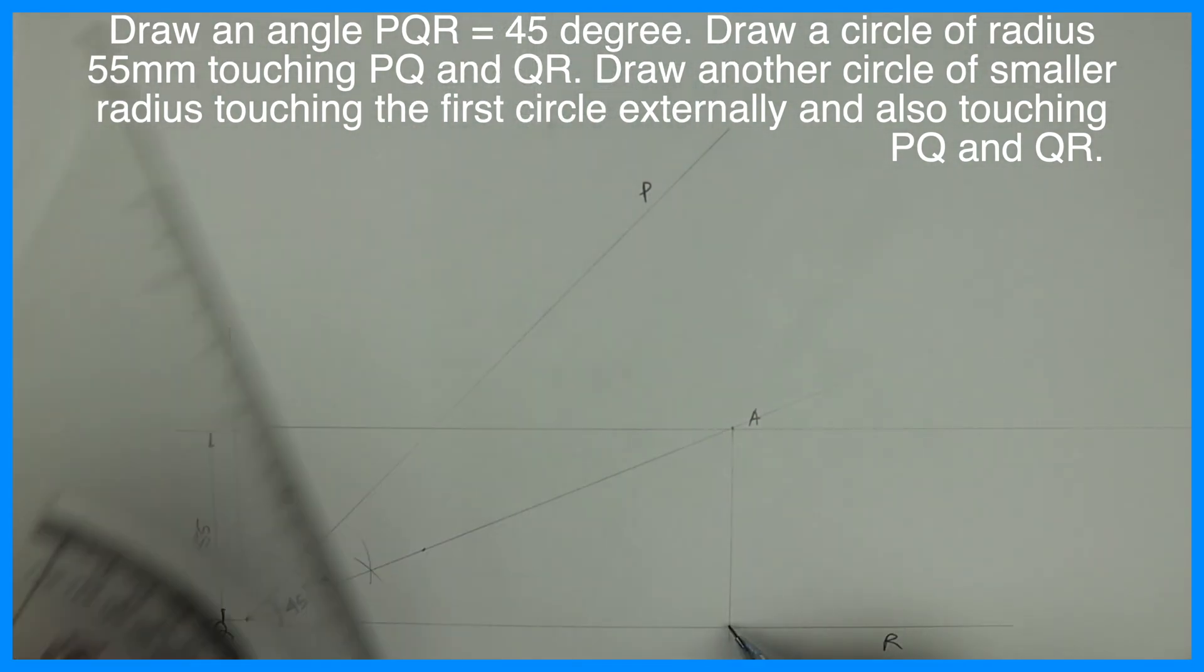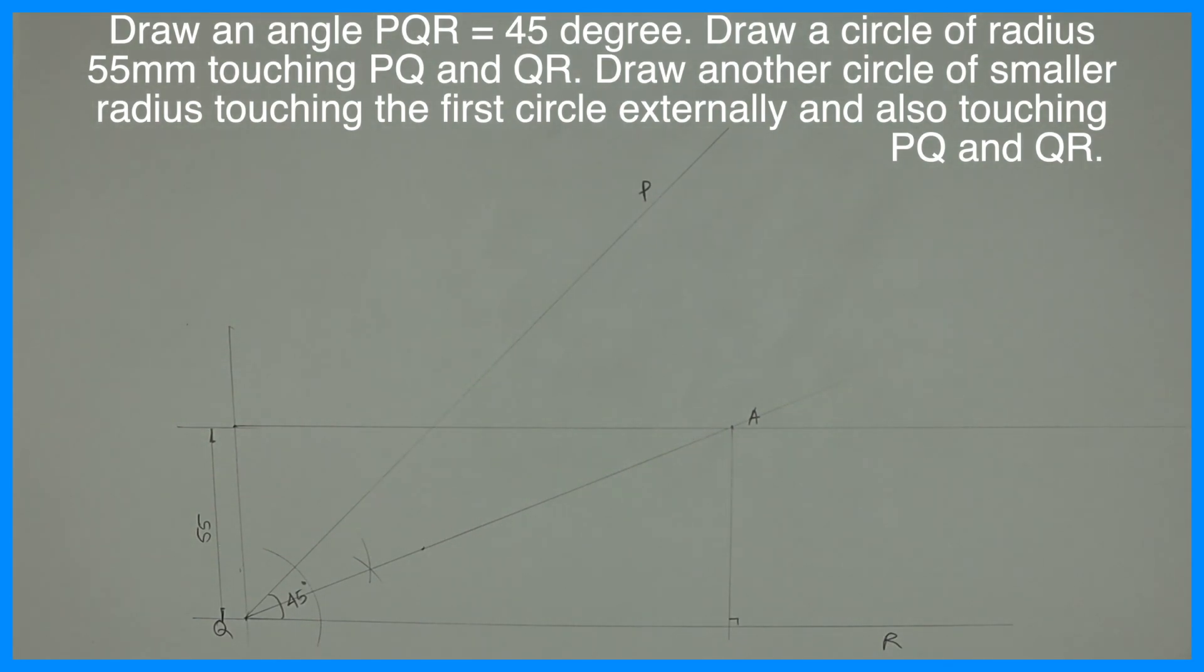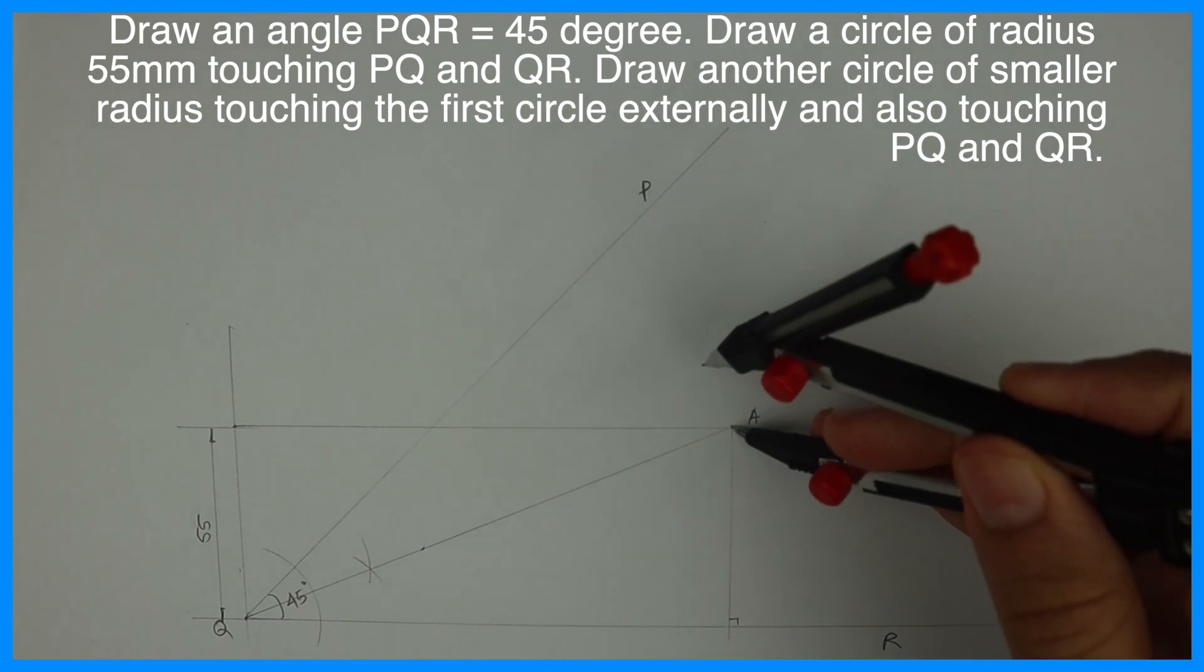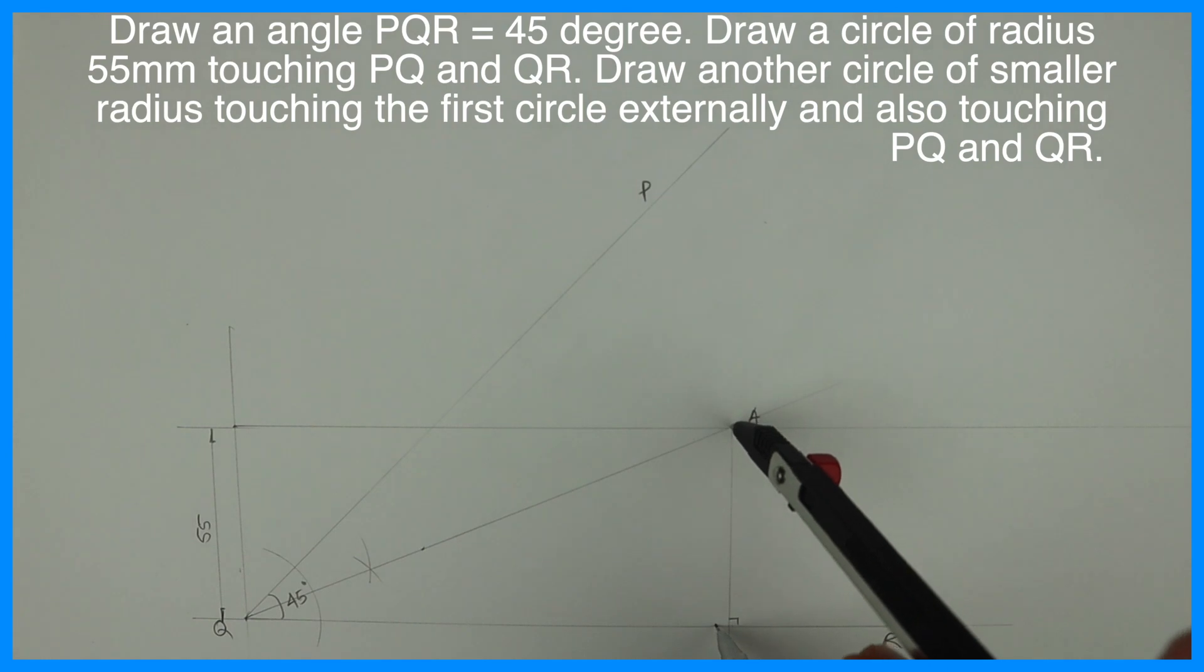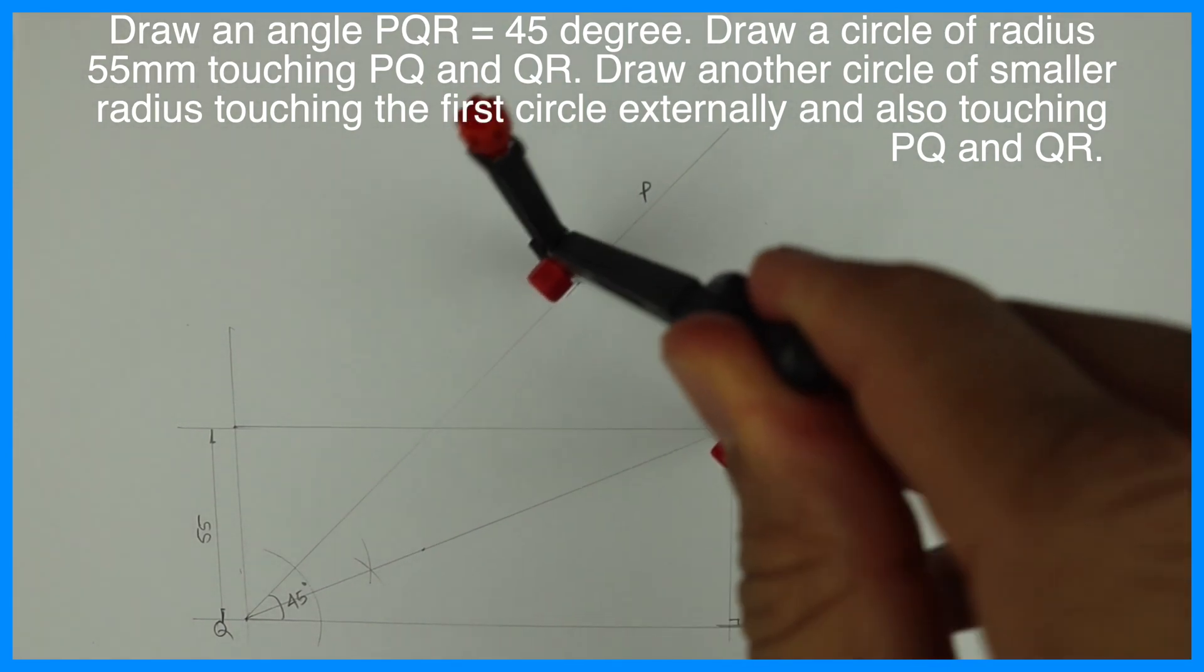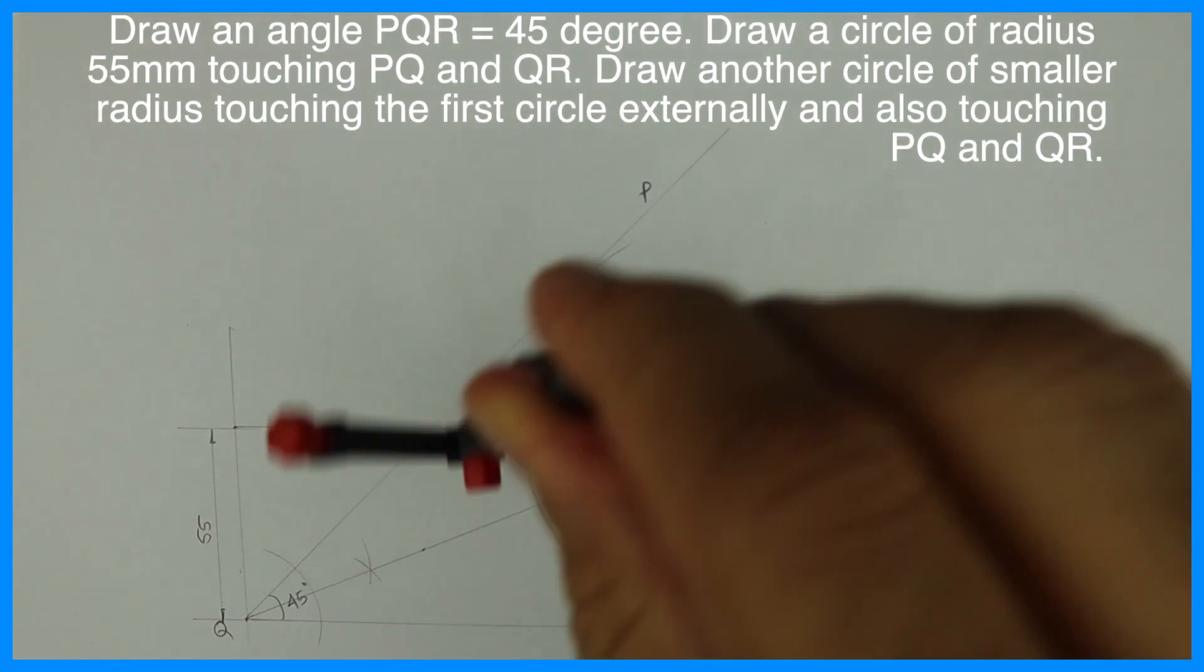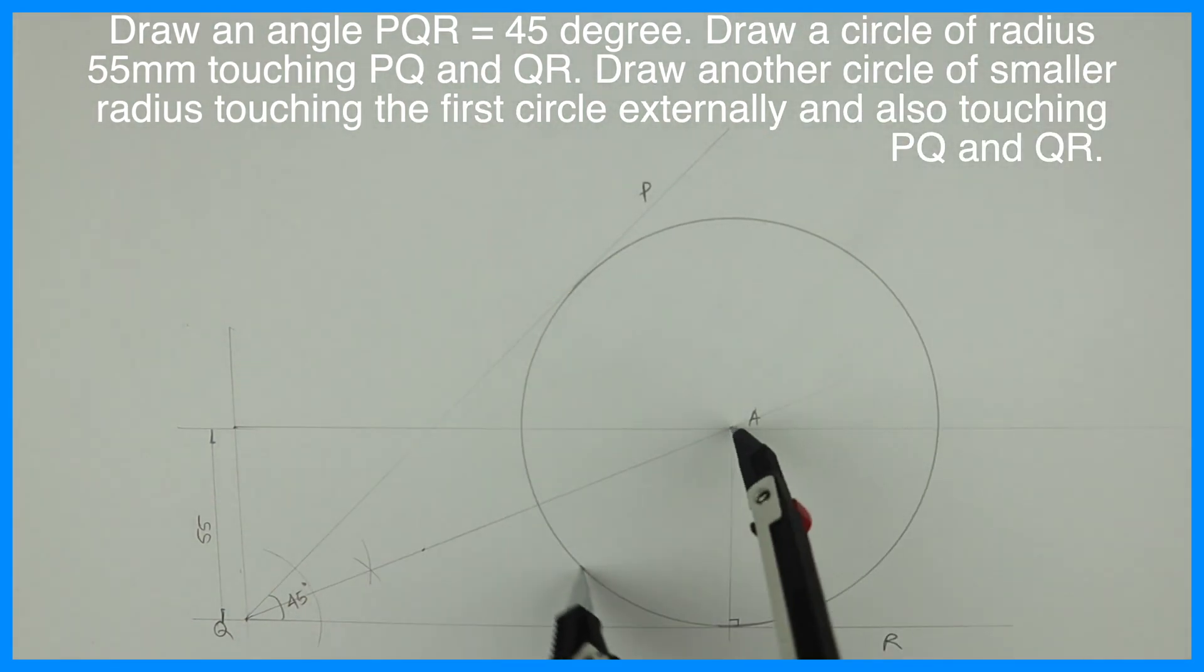Now from A we will draw perpendicular line. We will take compass. We will take radius equal to 55 and we will draw a circle. So it should touch PQ and QR.